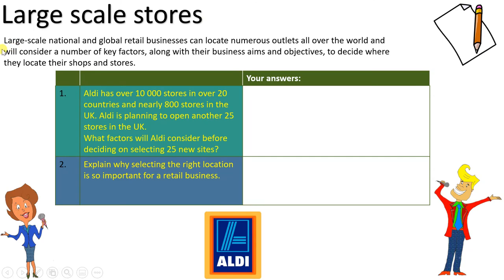For Task 3, large-scale national and global retail businesses can locate numerous outlets all over the world, considering key factors alongside their business aims and objectives. Here we look at Aldi. Question one: Aldi has over 10,000 stores in over 20 countries and nearly 800 stores in the UK. Aldi is planning to open another 25 stores in the UK. What factors will Aldi consider when selecting 25 new sites? Find some Aldi locations, look at where the newest ones are built, investigate what's around them, and compare what Aldi offers the communities it serves.